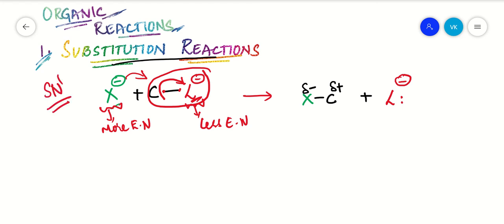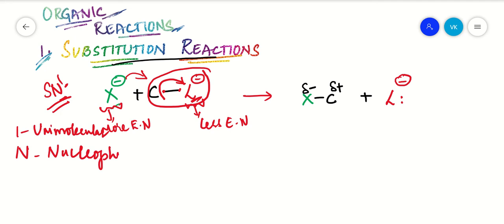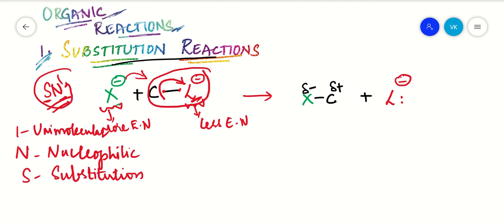Now we will look at SN1 reactions. SN1 stands for unimolecular nucleophilic substitution — S means substitution, N means nucleophilic, and 1 means unimolecular. In SN1 reactions, the leaving group leaves first, then the incoming nucleophile attacks the electrophilic carbon center to form the product. This takes place in two steps.